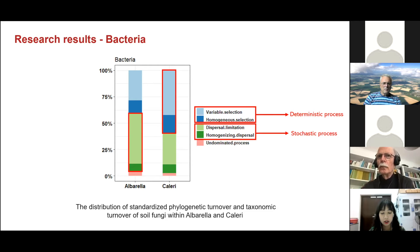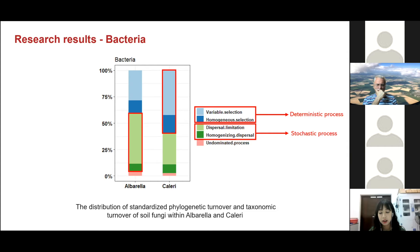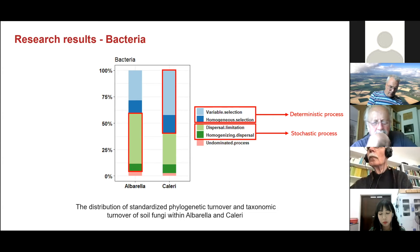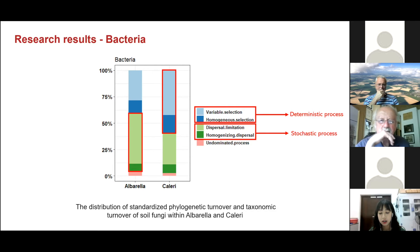Under this framework, homogeneous dispersal may allow species to persist in their unfavorable habitats, leading to low species turnover among localities. Dispersal limitation may cause species to be absent from their preferred habitats, resulting in high species turnover. As a result, deterministic processes, particularly variable selection, may have dominated the community assembly of soil bacteria in Caleri, while the stochastic process of homogeneous dispersal may have played an important role in driving taxonomic turnover in Albarella.